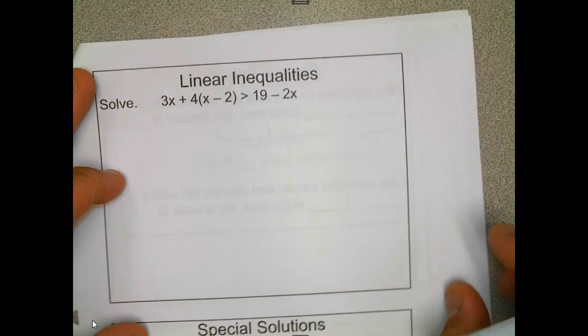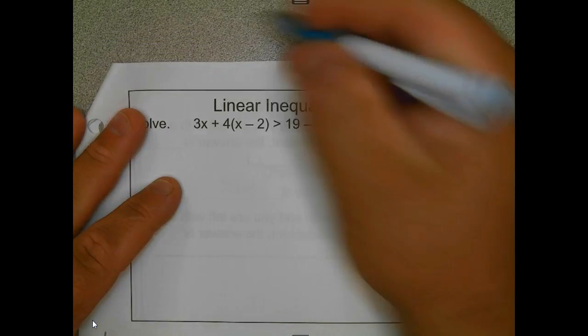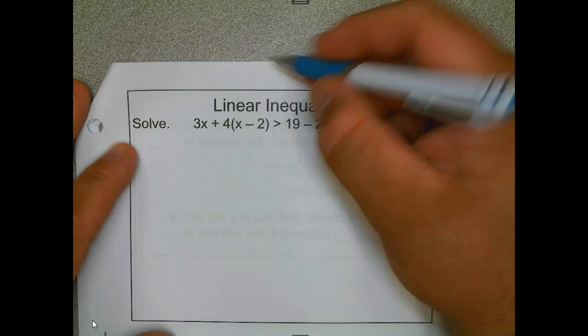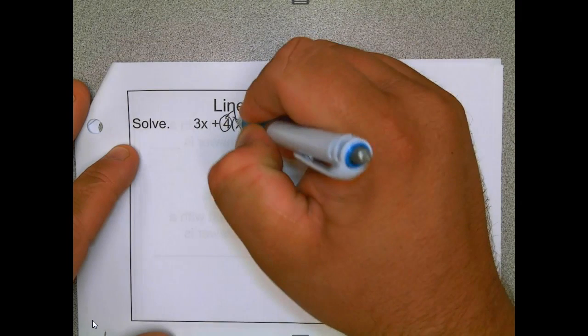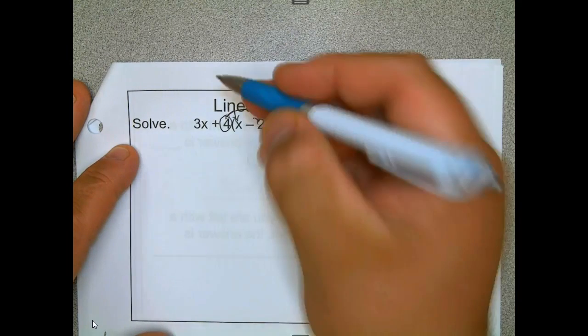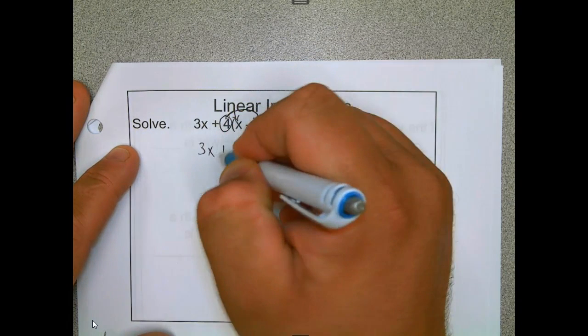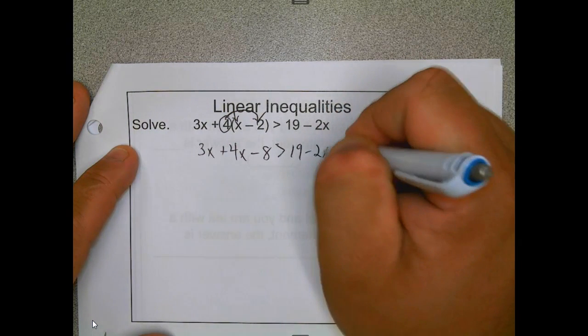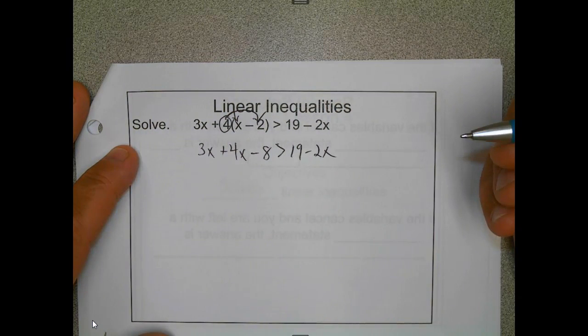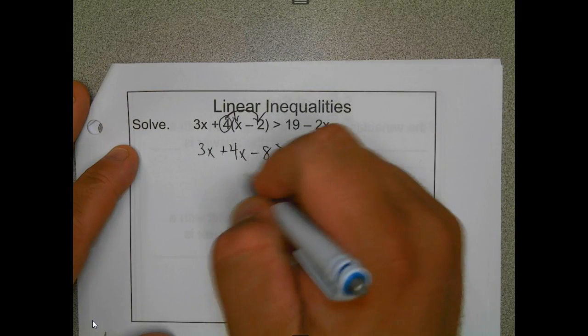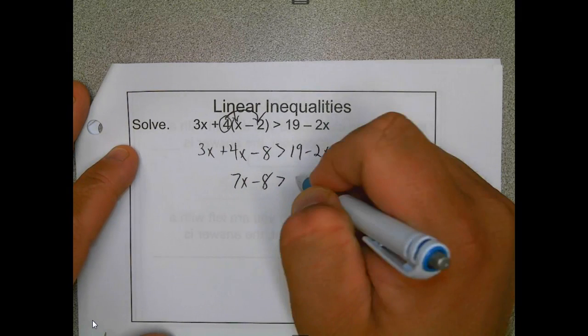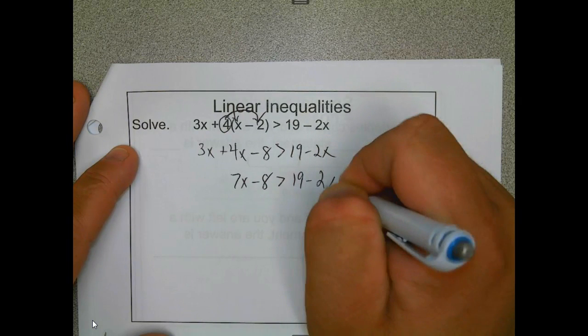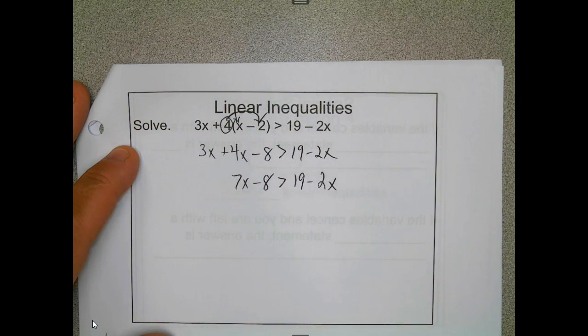The last thing we want to talk about is sometimes you have to distribute. Well, that's okay, go ahead and just like we practiced. I went and skipped all the way to this slide. You distribute to everything inside the parentheses, so in this case I have 3x + 4x - 8 is greater than 19 - 2x. Just like we talked about in the past, you combine like terms.